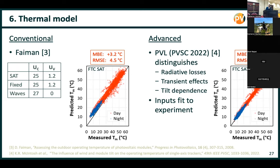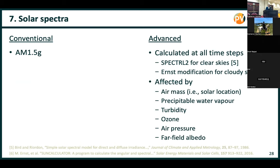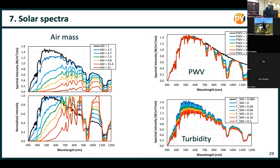For solar spectra, it's conventional to use the AM1.5G spectrum or effectively assume it. In the advanced case, we calculate the spectrum at every hour of the year for both direct and diffuse depending on atmospheric conditions. The three main influences on spectrum are air mass, precipitable water vapour, and turbidity. Remembering that this site is dry and dusty, that's why this site has a larger difference to AM1.5G than many others. We've looked at sites where the MBE is practically the same, but the scatter varies throughout the day and year, so spectral differences are generally considered important.